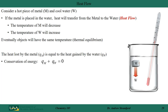Let's start off our discussion on calorimetry by considering a hot piece of metal, M, and cold water, W. If the metal is placed in the water, heat will transfer from the metal to the water — that is called heat flow. The temperature of the metal will decrease, the temperature of the water will increase, and eventually both objects will have the same temperature: thermal equilibrium.